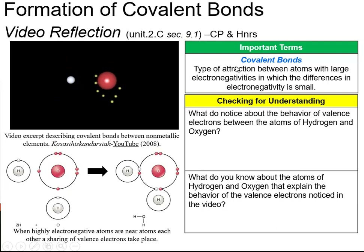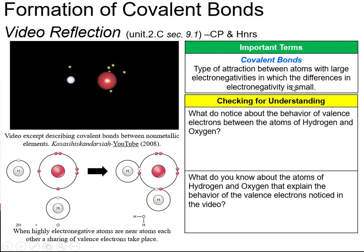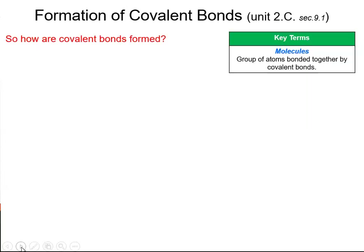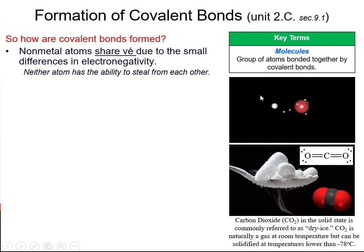Covalent bonds are an attraction between atoms with really large electronegativities relative to those metal ones, and the connections between them result in small differences of electronegativity. Covalent bonds are formed when atoms of nonmetals attempt to share electrons because their electronegativities are rather similar.